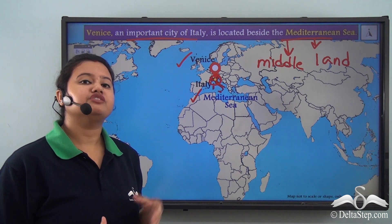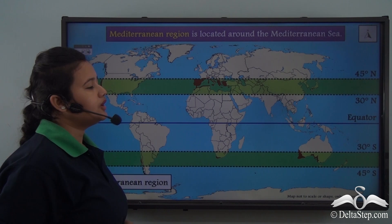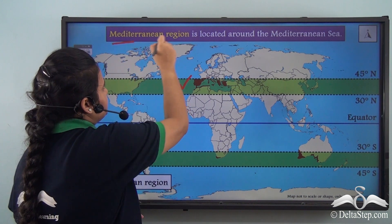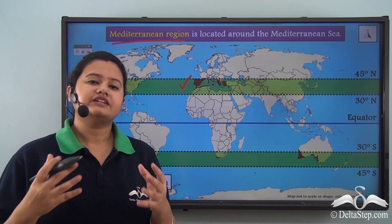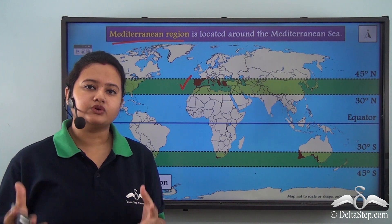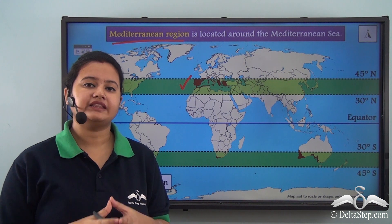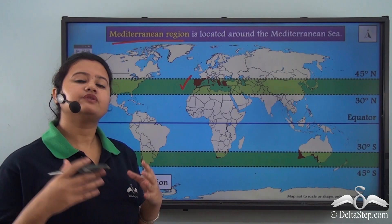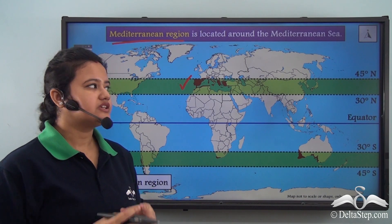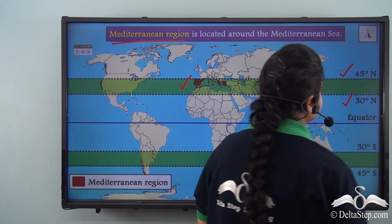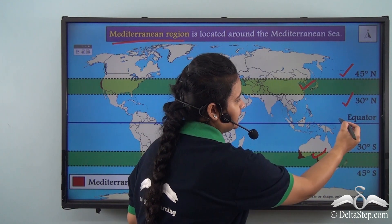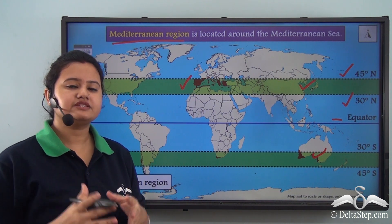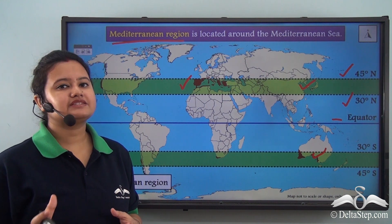Now let us explore the region around Mediterranean Sea. The region around Mediterranean Sea is known as the Mediterranean region. This region is unique not only because of its location but also because of its climatic condition, and thus Mediterranean region forms an important biome of the world. This biome, or natural region of the world, stretches from 30 to 45 degrees north and south of the equator. This biome is not only restricted around the Mediterranean Sea but also spreads to other parts of the world.